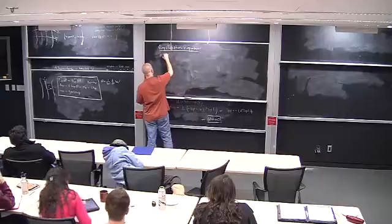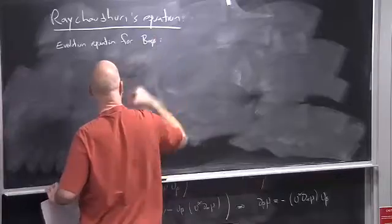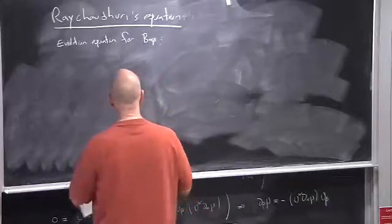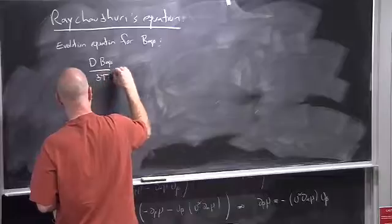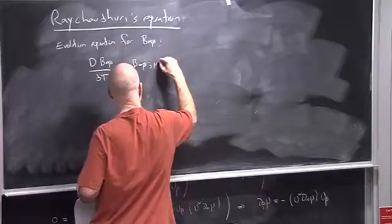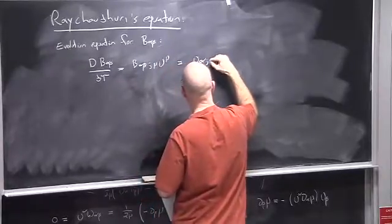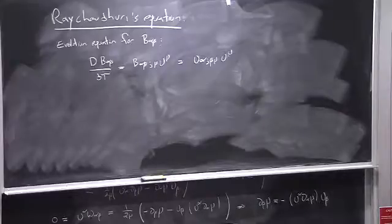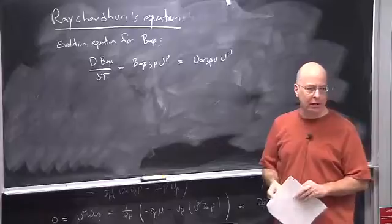Let's work out an evolution equation for B. This is essentially a little bit more general than what we did for the geodesic deviation equation. What I mean by an evolution equation for B_αβ is to work out the covariant derivative of that tensor along the congruence: u^μ ∇_μ B_αβ = u^μ ∇_μ ∇_β u_α.